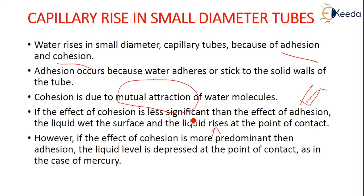However, if the effect of cohesion is more predominant than adhesion, then the liquid level will be depressed at the point of the contact. As in the case of mercury, mercury is the best example for this.